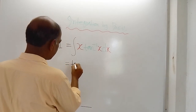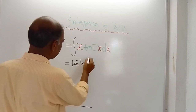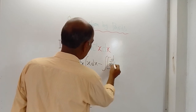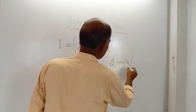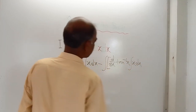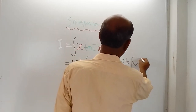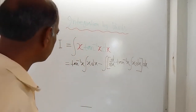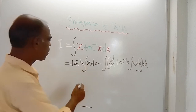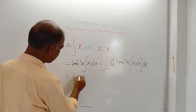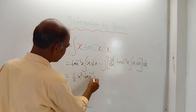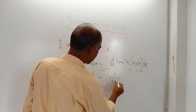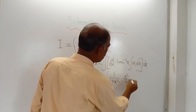So the next line will be: tan inverse x times the integration of x dx, minus the integration of d/dx of tan inverse x, then integration of x dx, then dx. You know the formula. So what is the integration of x? It is x squared by 2. So we have half x squared tan inverse x. What is the derivative of tan inverse x? That is 1 by 1 plus x squared, and again integration of x is x squared by 2, then dx.